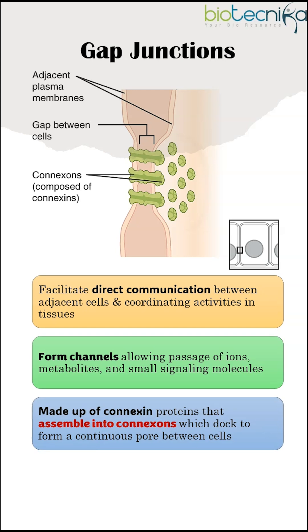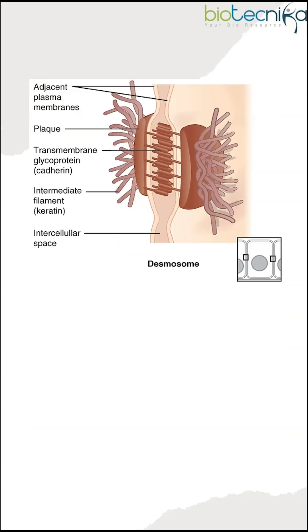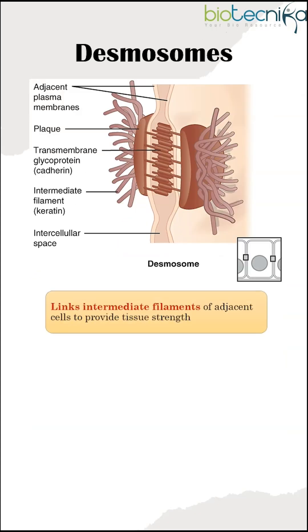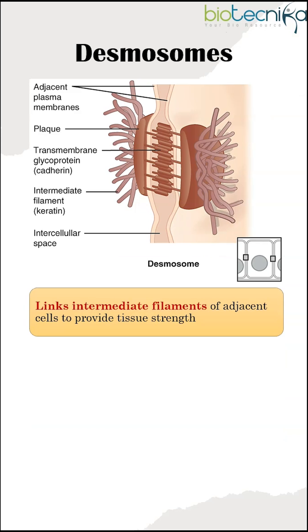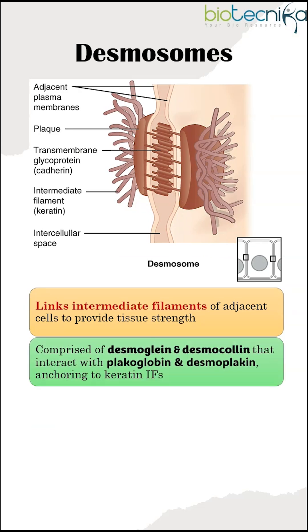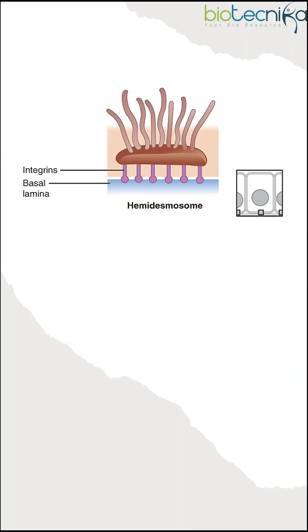Gap Junctions are made up of connexin proteins that assemble into connexons. Desmosomes link intermediate filaments of adjacent cells to provide tissue strength, and are comprised of desmoglein and desmocollin, which interact with plakoglobin and desmoplakin.